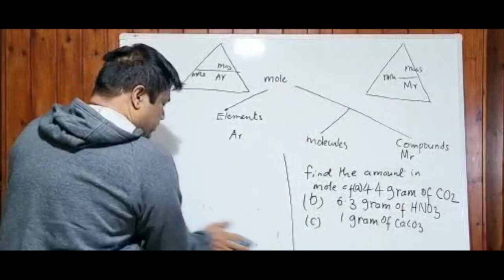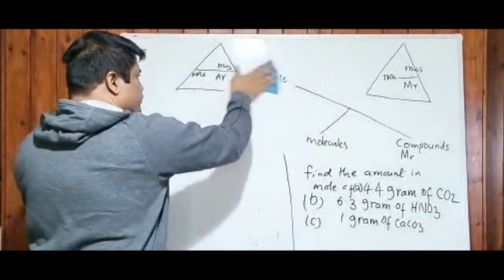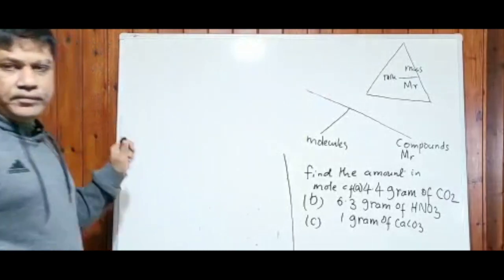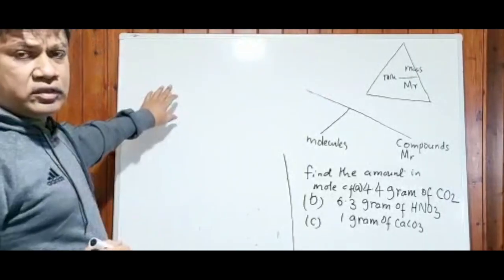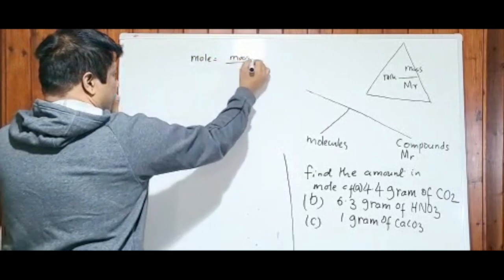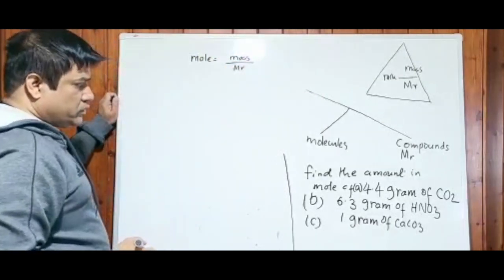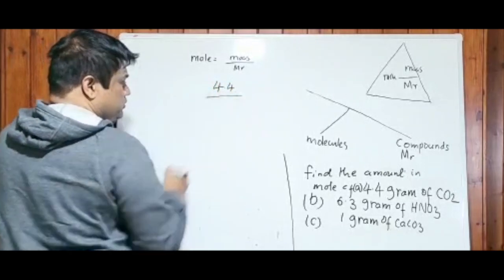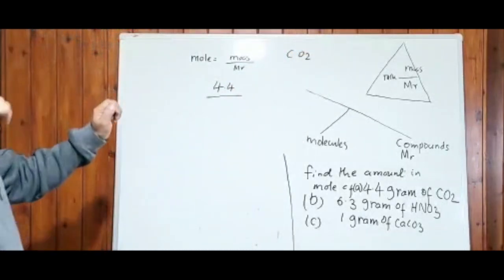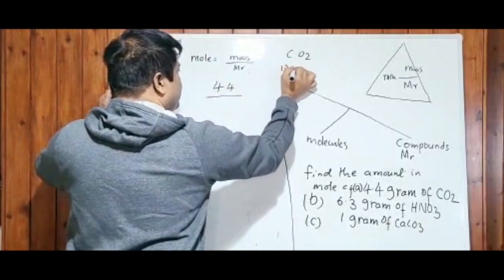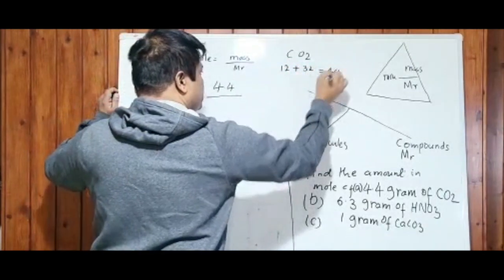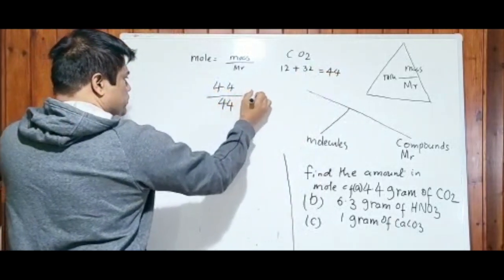Let's do the first one, which is 4.4 grams of carbon dioxide gas. What is the formula? Mole equals to mass divided by its MR. What is the mass? 4.4 grams of the carbon dioxide, CO2. I taught you how to work out the MR: carbon 12 plus oxygen 16 times 2 equals 32, which is nothing but 44. So 4.4 divided by 44, which equals to 0.1 mole. Mole has no unit.